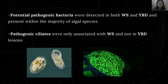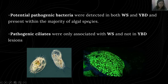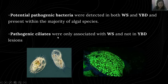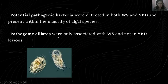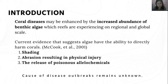It is important to note that the microorganisms can either be a species of bacteria or a species of ciliates. In the results section, pathogenic bacteria were detected in both WS and YBD disease patients and were present within the majority of algal species, while pathogenic ciliates were only associated with WS and not with YBD lesions.